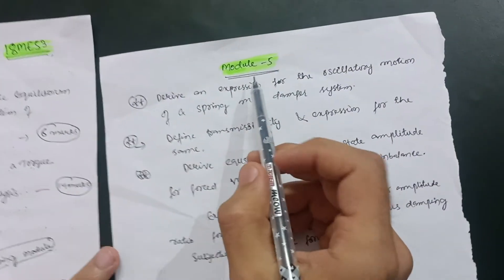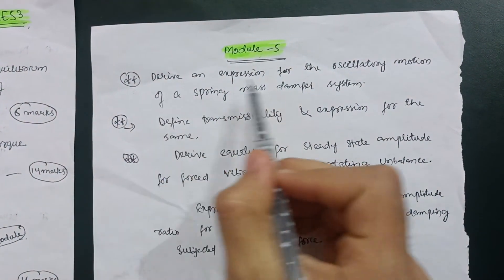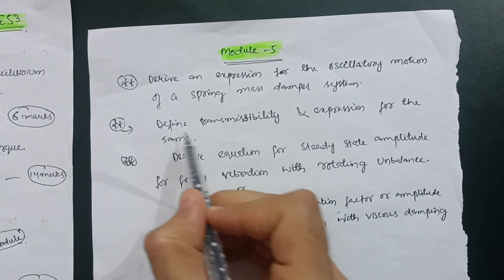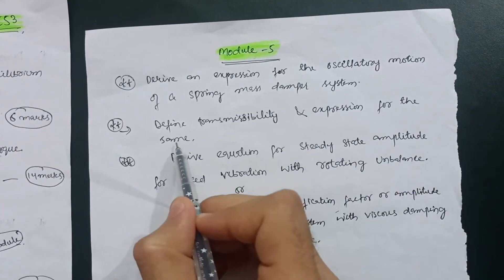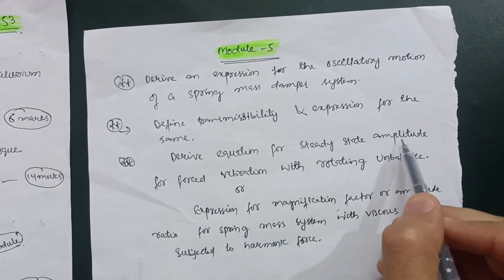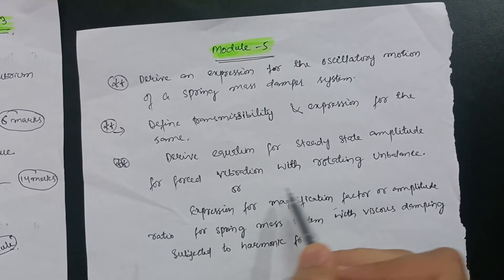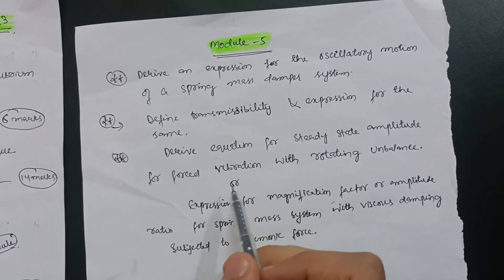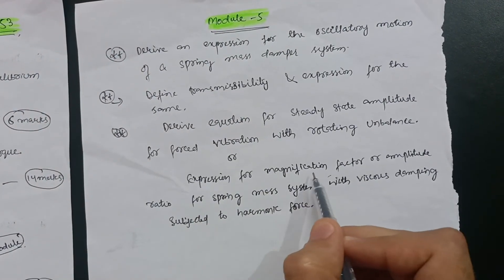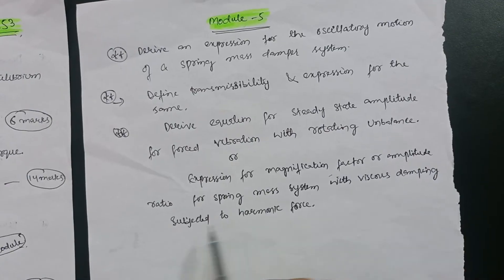Then Module 5 comes up. Only three derivations are there. It will carry 10 marks. Derive an expression for the oscillatory motion of a spring mass damper system, or define transmissibility and expression for the same. Also, derive equation for steady state amplitude for forced vibration with rotating unbalance, or the expression for magnification factor or amplitude ratio for spring mass system with viscous damping subject to harmonic force.